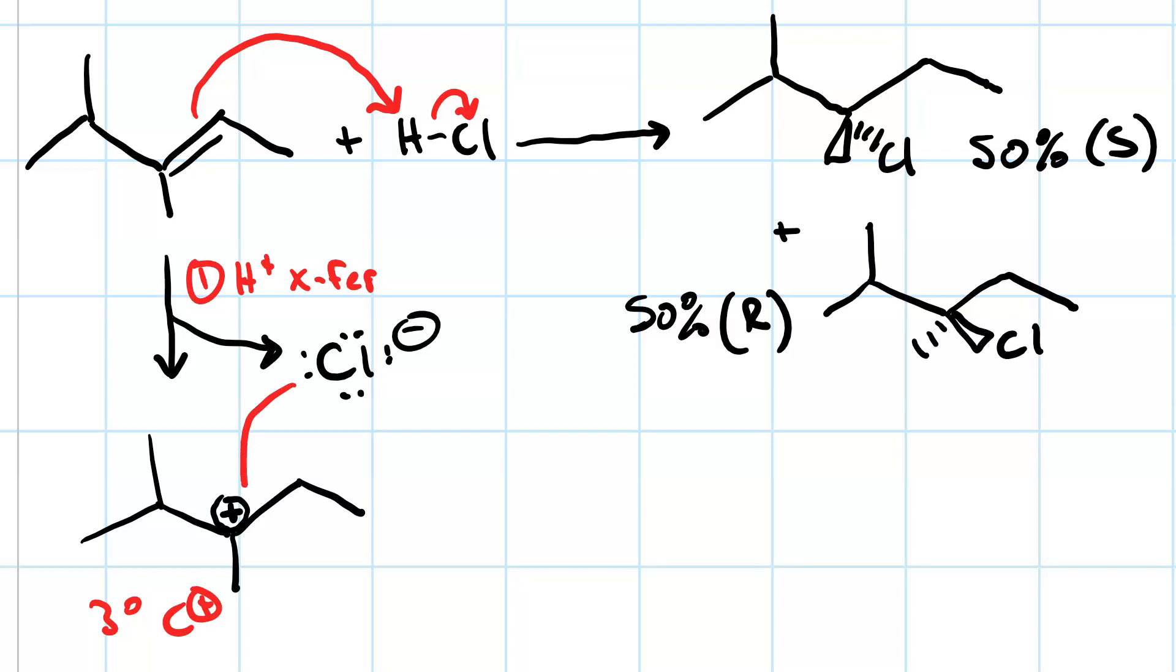So we have nucleophilic attack on the carbocation, yielding this pair of outcomes. Again, because the carbocation is planar, and the nucleophile can attack from above the plane or below the plane.